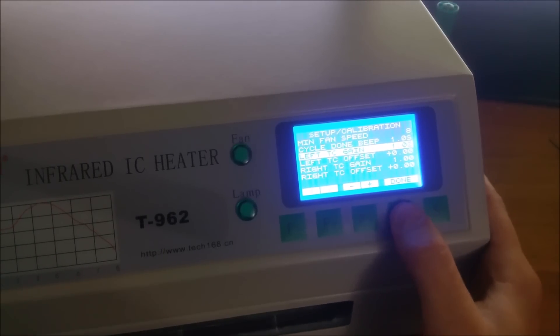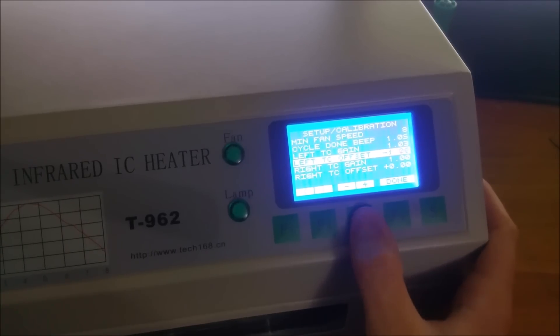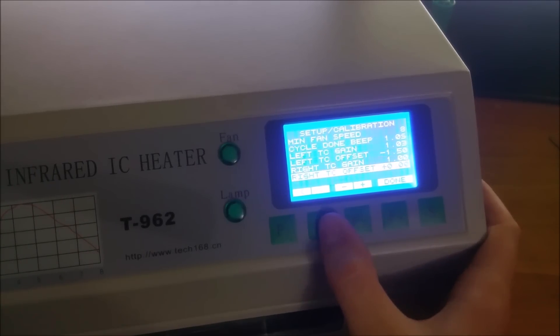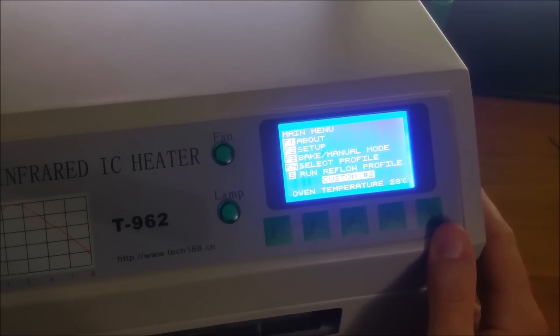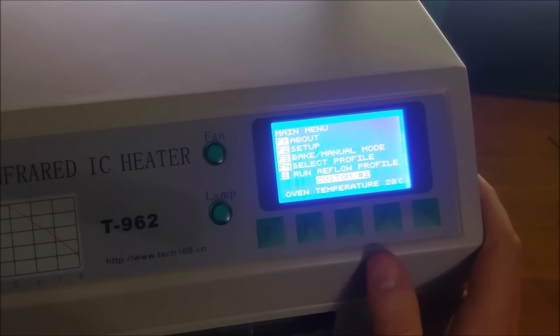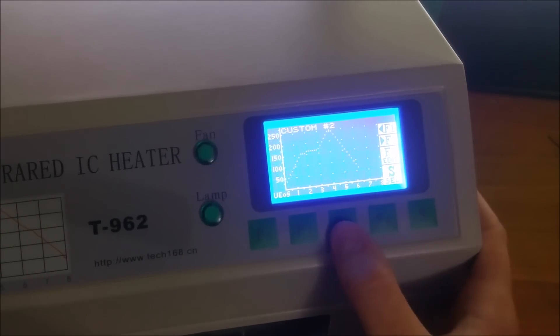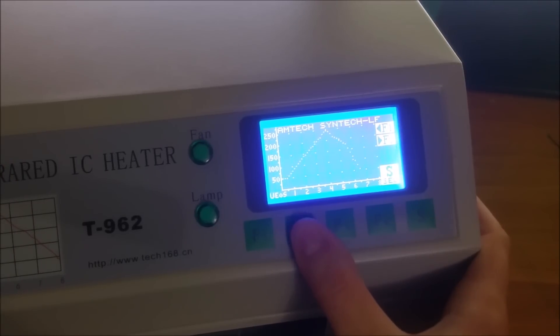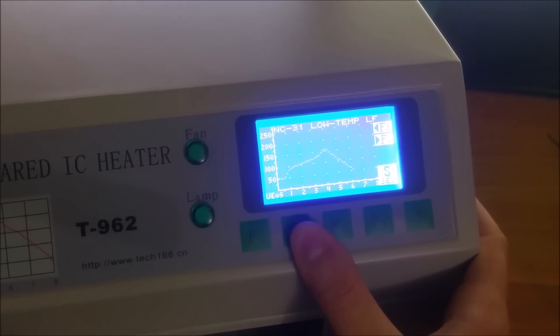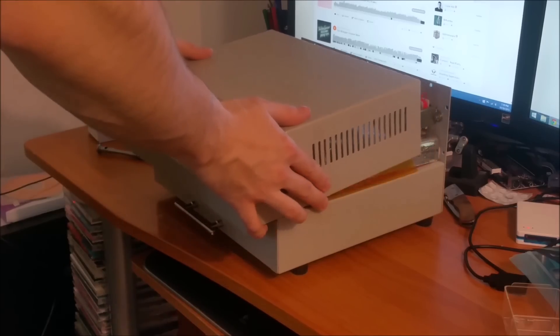The firmware also adds a gain and offset control to each of the two thermocouples independently for calibration purposes. You can also customize the speed at which the fan runs at for mixing the oven air. Then there's a manual bake mode which can be useful for calibration or niche applications. For what it's worth, the new firmware is also significantly more responsive and aesthetically pleasing than the original firmware.